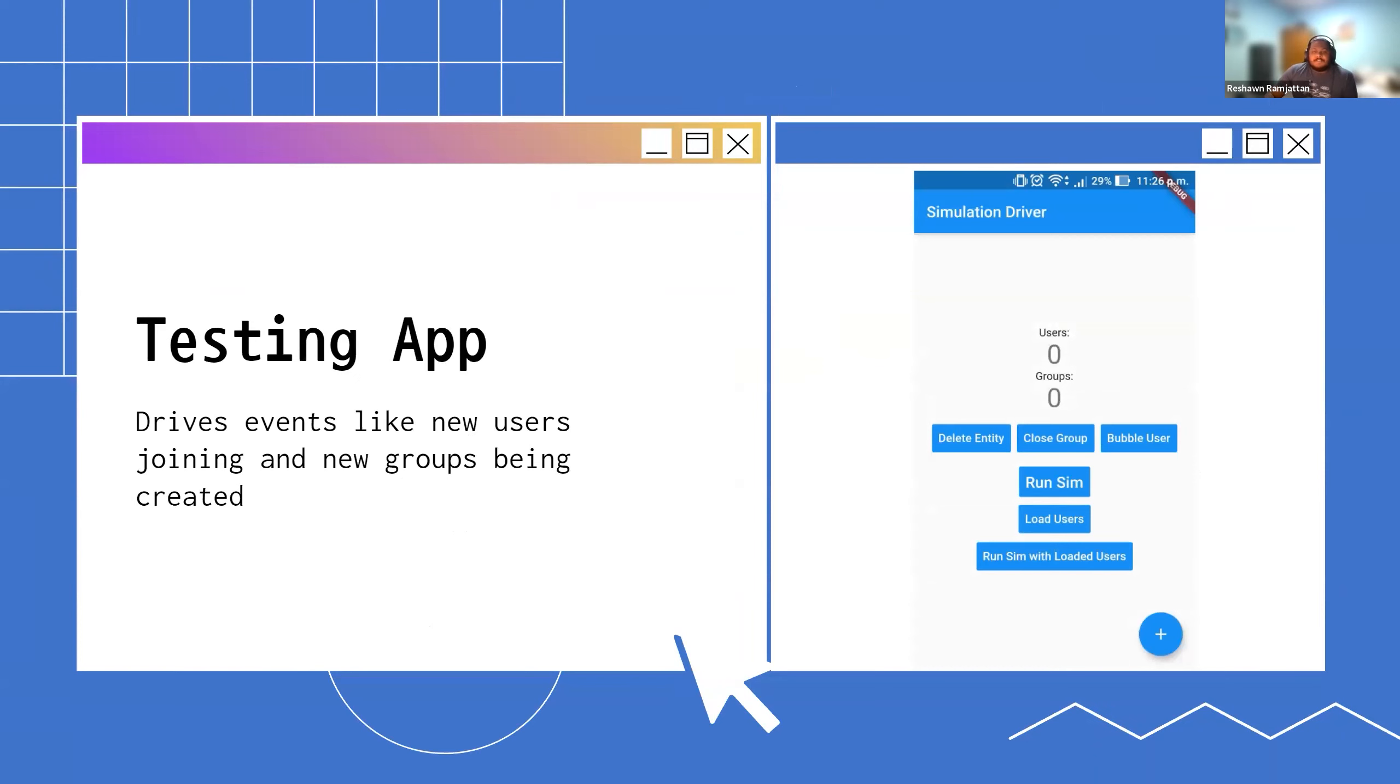The testing app, this is what it looked like. It was basically just for driving our simulations so that we can evaluate our framework. You could do something like adding a single user, creating a single event, or doing it more at scale, adding a thousand people over time or creating tons of groups over time.